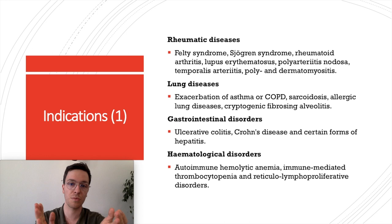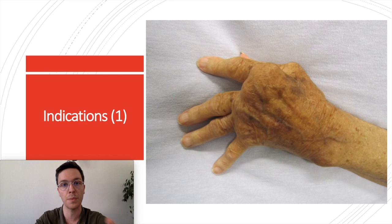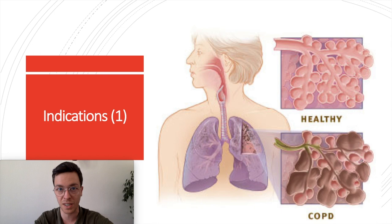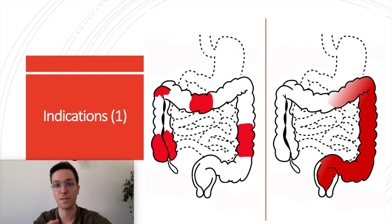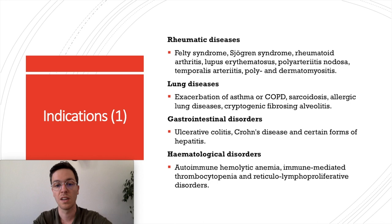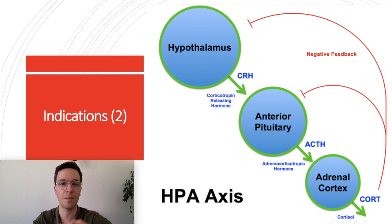Feel free to pause the video at any time to check them out in more detail. When using prednisone for rheumatic diseases, it's most commonly used as maintenance treatment for rheumatoid arthritis. In treating lung diseases, it is used in exacerbations of asthma or COPD, and also sarcoidosis, or in severe allergic reactions. For gastrointestinal disorders, it's most commonly used in maintenance treatment of ulcerative colitis or Crohn's disease, and in hematological disorders it can be used to treat autoimmune hemolytic anemia.